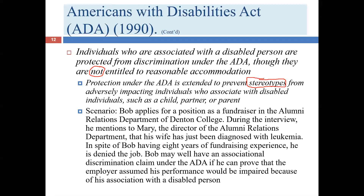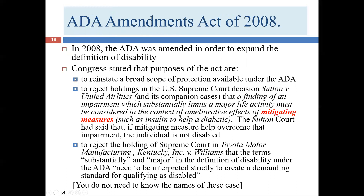Consider this scenario: Bob applies for a fundraiser position. During the interview he mentions his wife was just diagnosed with leukemia. Despite eight years of experience, he's denied the job. Bob may well have an associational discrimination claim under the ADA if he can prove the employer assumed his performance would be impaired because of his association with a disabled person.